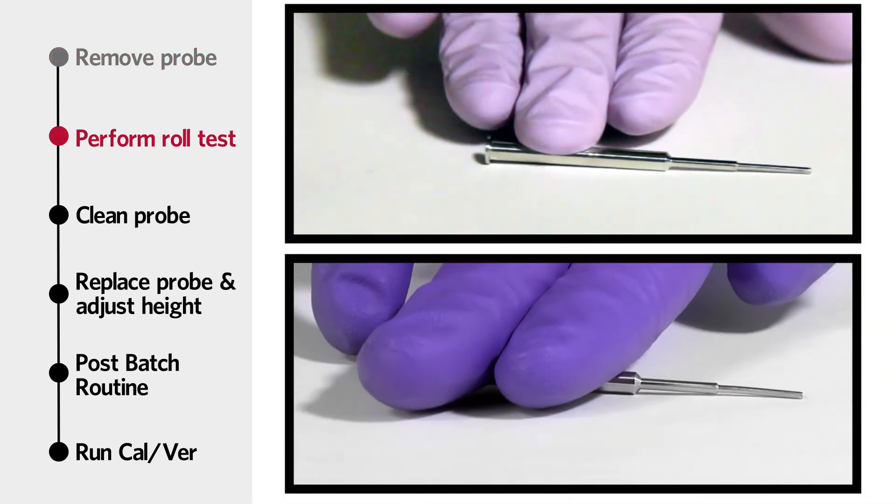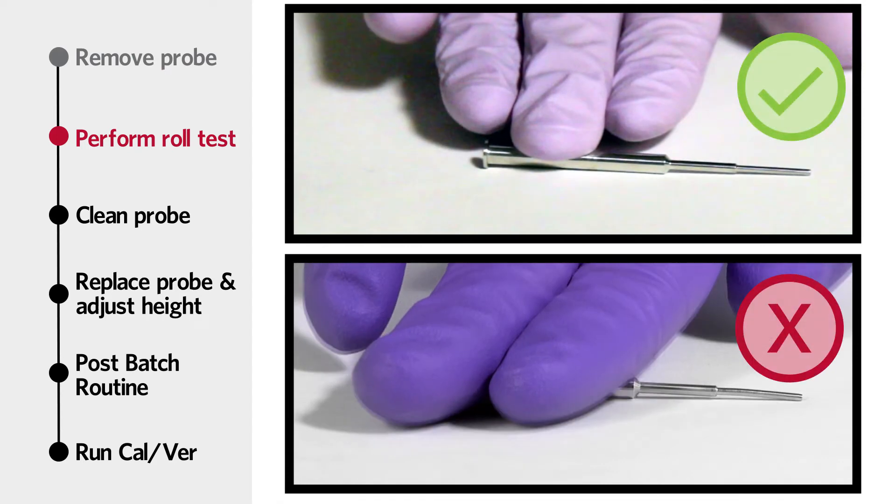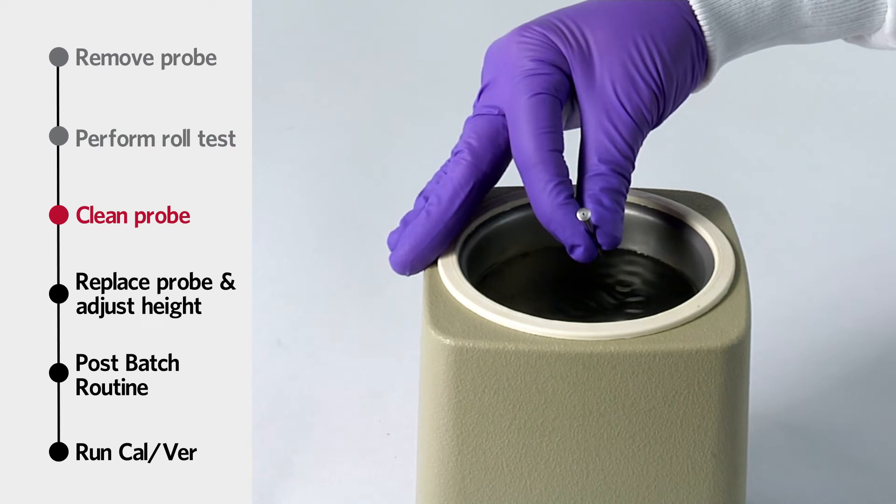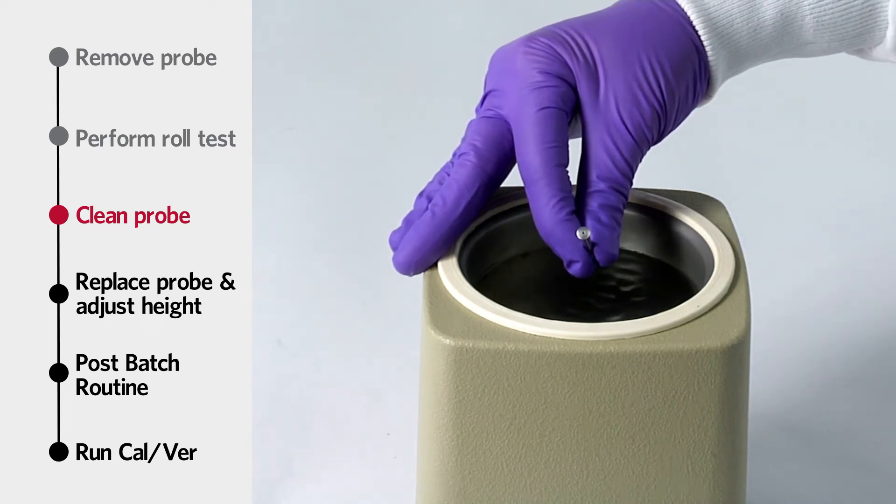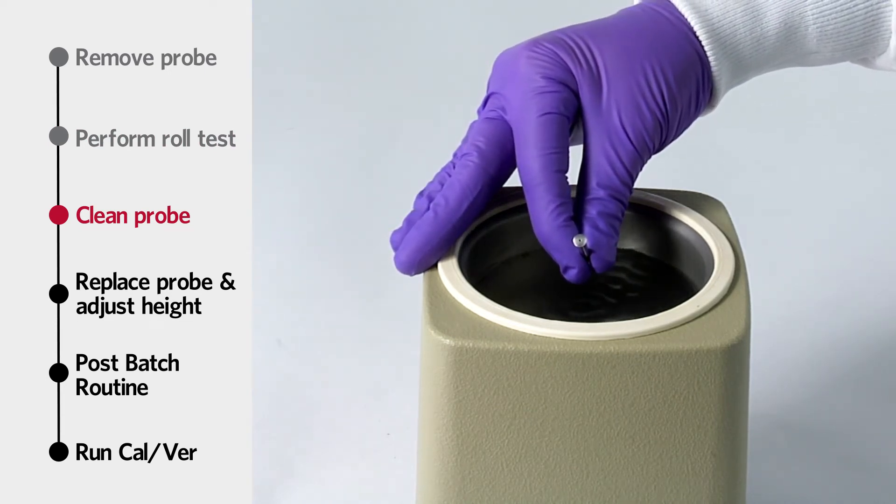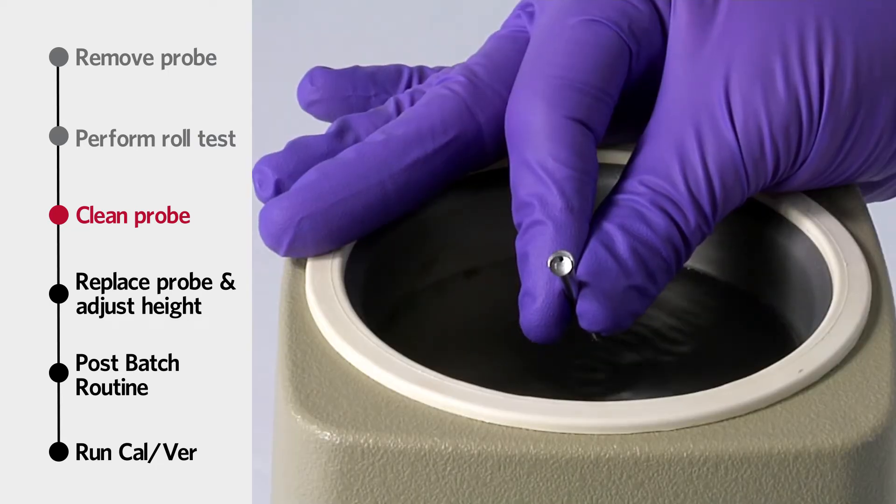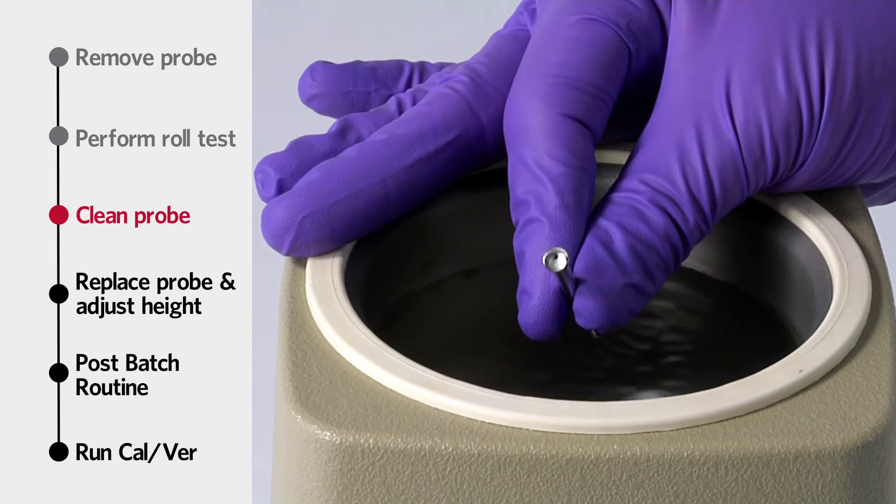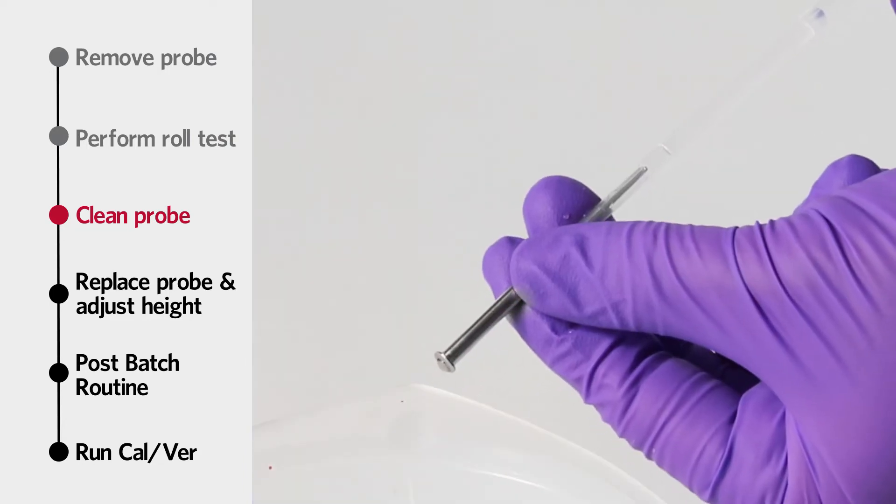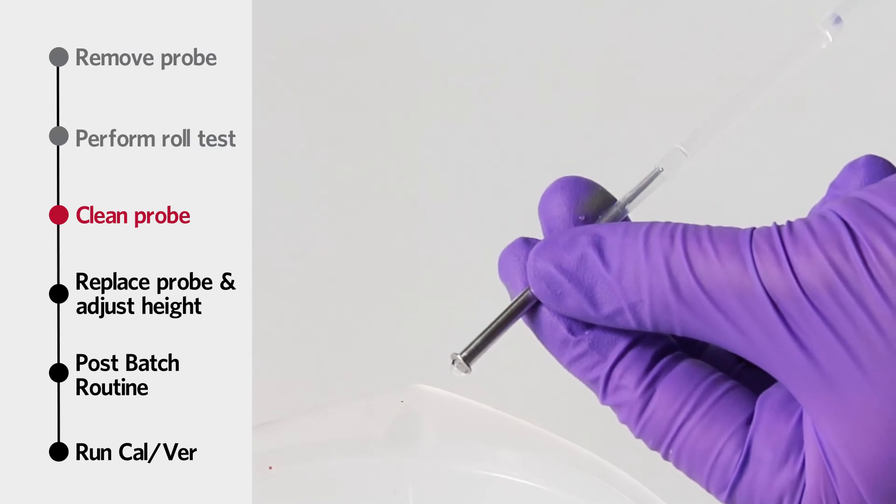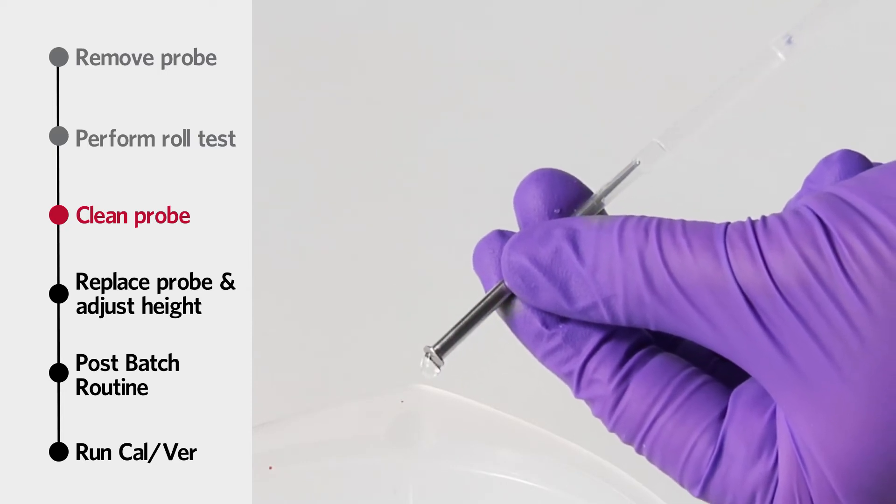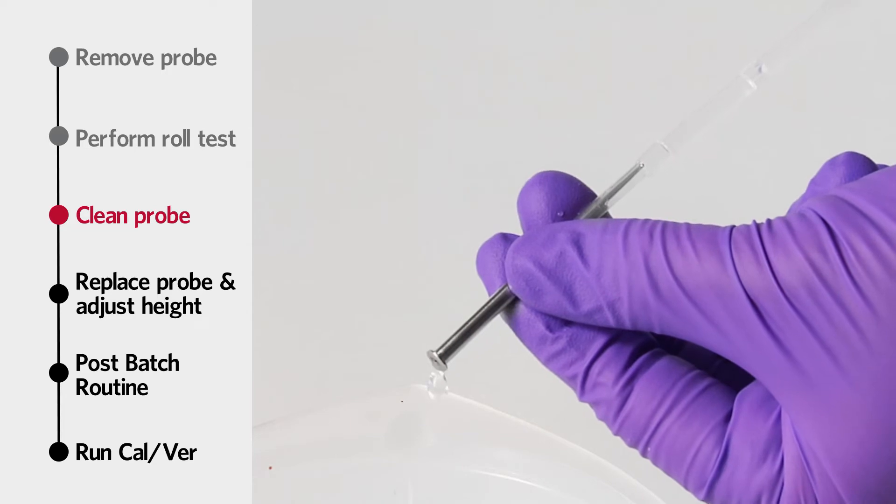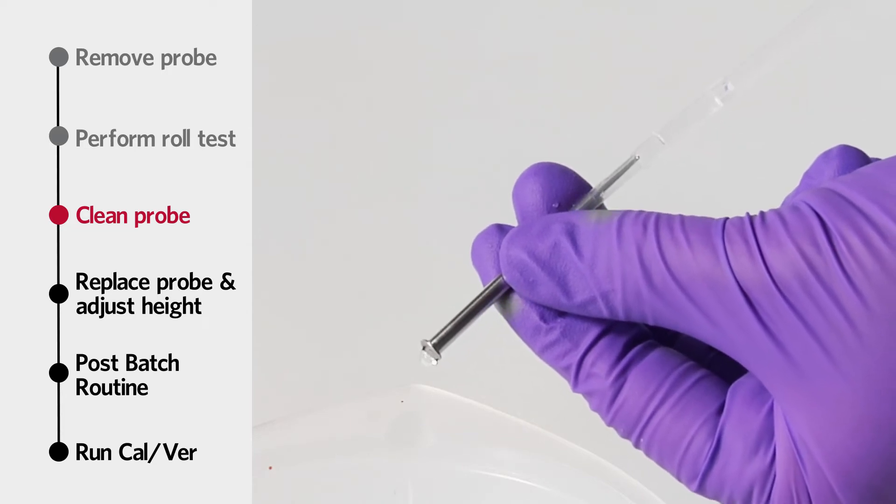Perform a roll test to ensure the sample probe is not bent. Clean the sample probe using either a bath sonicator or a 10 microliter syringe, or both. If using a bath sonicator, place the tip of the sample probe in the bath sonicator for 2 to 5 minutes. If using a syringe, force distilled water through the tip of the sample probe to its large end. This dislodges any debris clogging the tip.